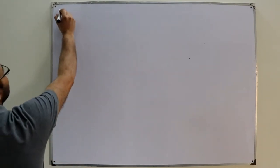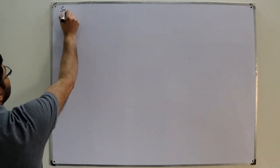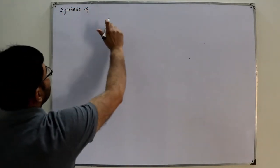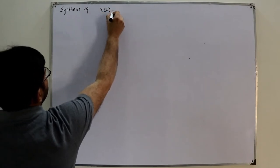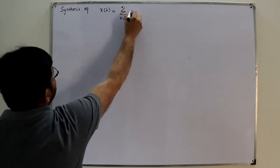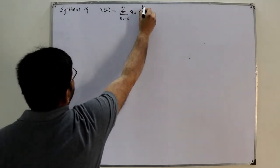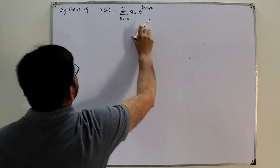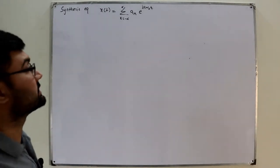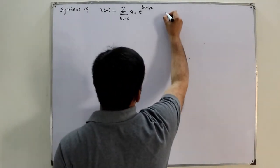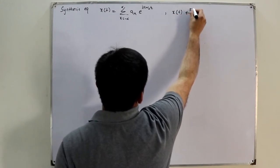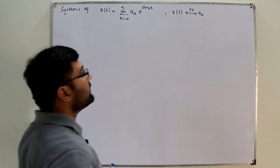I directly start with the synthesis equation. The synthesis equation in the complex exponential series is that x(t) can be represented as a summation, with k running from negative infinity to positive infinity, of ak times exponential of jk·ω₀·t. These ak are the Fourier series coefficients.